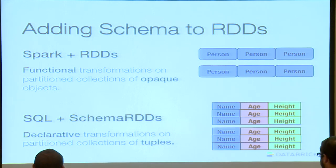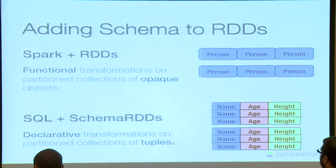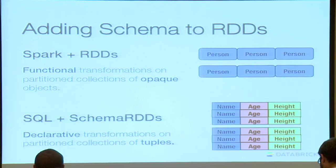Schema RDD has all of the normal features that RDDs have, but we also know the column names and the types of the data stored. This allows us to express declarative transformations — you say what data you want to retrieve, and the system decides when to filter things out, when not to read certain data off disk, and what the most efficient algorithm for doing a join is. All of that is taken care of for you.